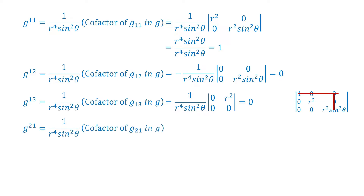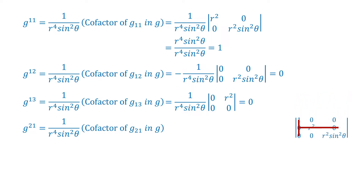g^21 equals 1 by r to the power 4 sin square theta, into the co-factor of g21 in g, which equals minus 1 by r to the power 4 sin square theta, into the determinant of: 0, 0; 0, r square sin square theta — which is equal to 0.